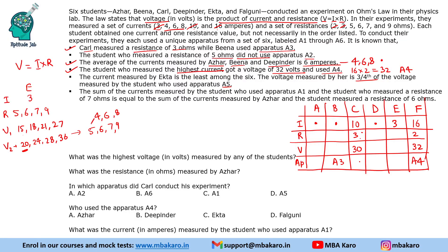To generate V2=20, we need 4 and 5, but then Ekta also needs resistance 5 — both cannot use it, so eliminated. For V2=24, we need 4 and 6, but Ekta would also need resistance 6 — eliminated. For V2=28, we need 4 and 7, but Ekta also needs resistance 7 — eliminated. For V2=36, possibilities are 4×9 or 6×6. The 4×9 case forces Ekta to use resistance 9, so the A5 student uses 6 and 6, giving voltage 36.